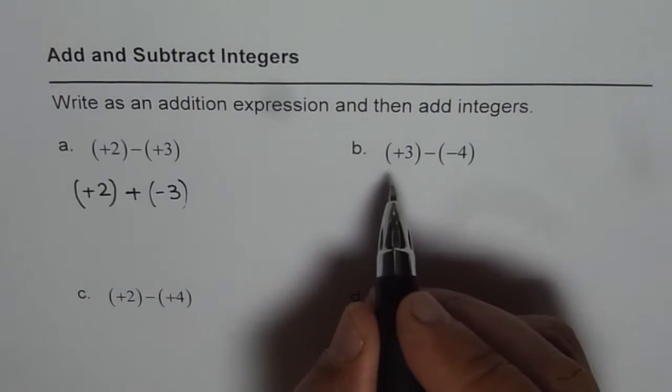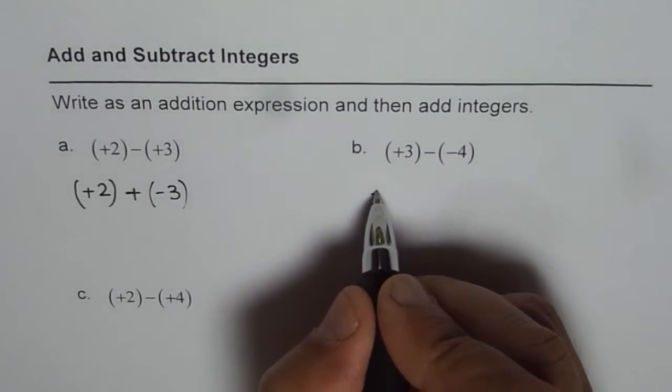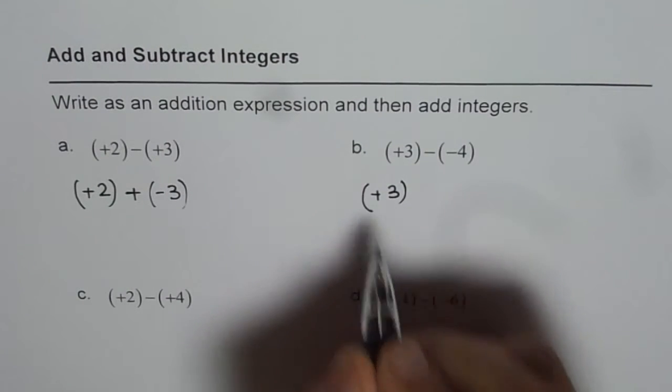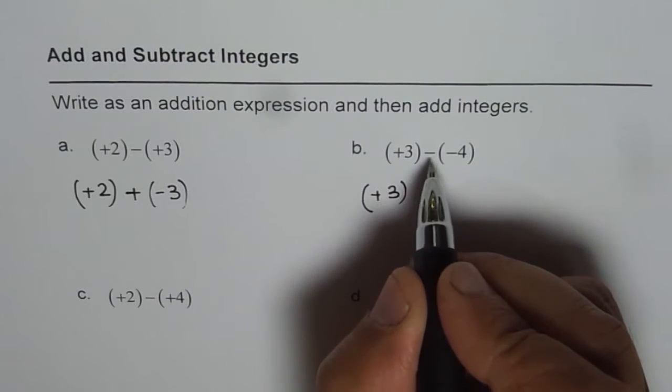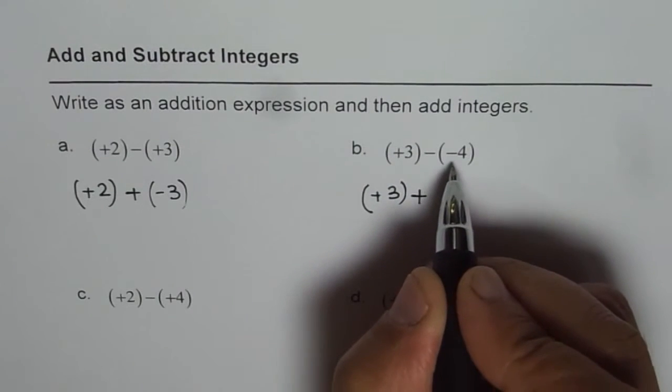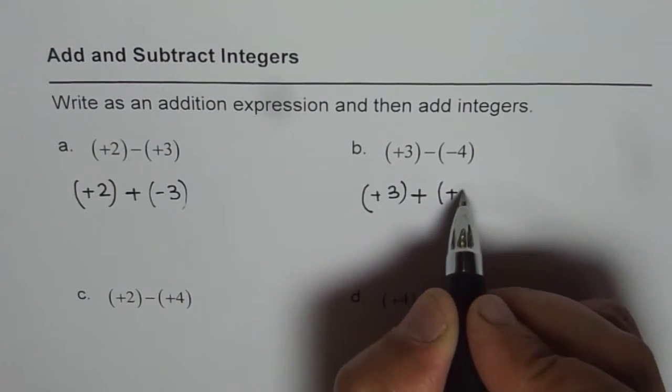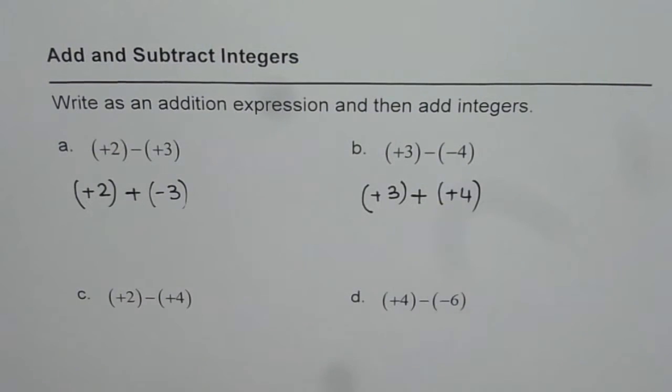Now, let us do the second one. Here we have (+3)-(-4). So, this becomes (+3) and we want to write this negative as positive. So, whenever I write negative as positive, I have to reverse the sign. So, we need to reverse this sign. So, reverse of negative is positive. So, that also becomes positive. We get positive 4.